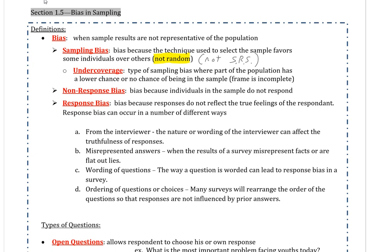Under coverage is a kind of subsection of sampling bias where part of the population has a lower chance or no chance of being in the sample.